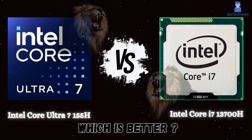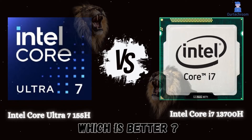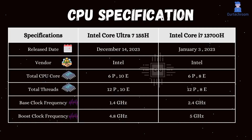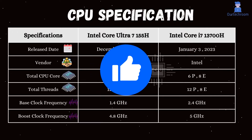In this video, I will compare the Intel Core Ultra 7 155H and Intel Core i7-13700H, highlighting their differences and then providing a conclusion to help you determine which one is the better choice. Both processors are from Intel and have slight variations in their features, which we will discuss in detail. Finally, I'll share my recommendations on which processor to choose.